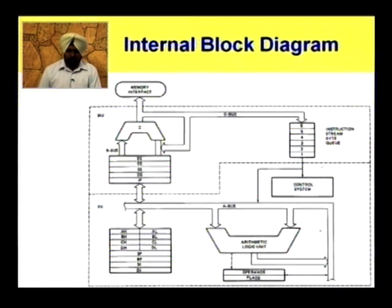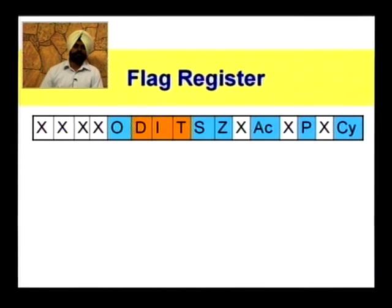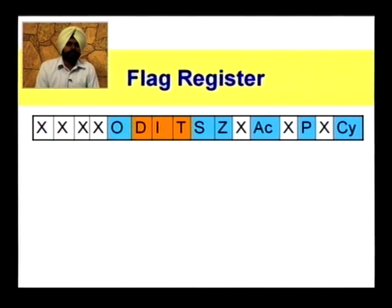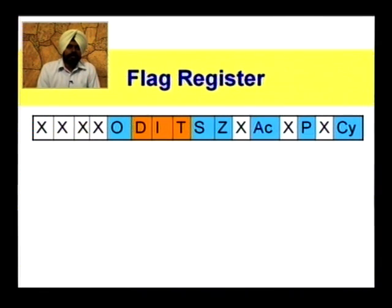Now, to the flag register. The flag register of the 8086 microprocessor is 16-bit wide and has 9 flags: Carry Flag, Parity Flag, Auxiliary Carry Flag, Zero Flag, Sign Flag, Trap Flag, Interrupt Flag, Direction Flag, and Overflow Flag.